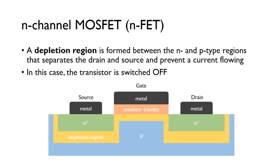We're going to look at how to make an n-channel MOSFET, or an NFET. If you get a piece of p-type positive silicon, you can implant these negative n-type areas underneath the source and the drain. When you put these n and p-types together, it forms a depletion region — shown here in yellow — which is a non-conductive region that stops any current flowing between drain and source. The transistor is switched off because there's no conducting channel for current to get from drain to source.